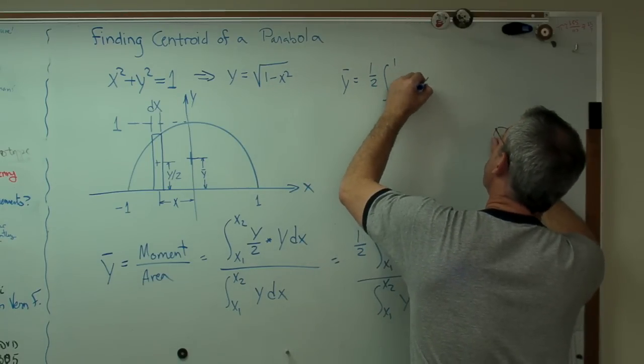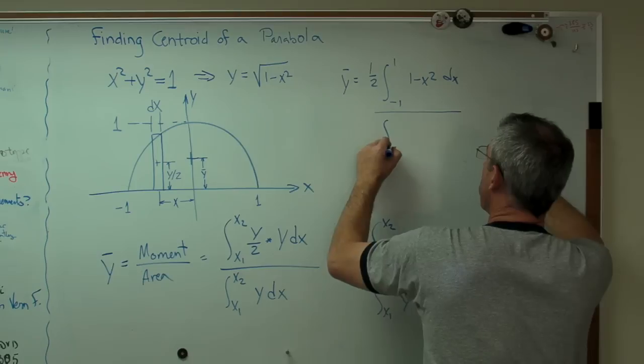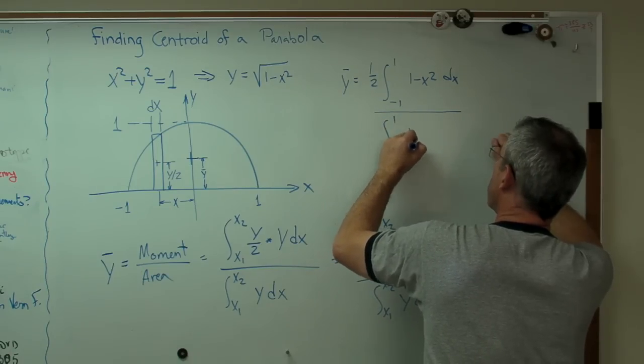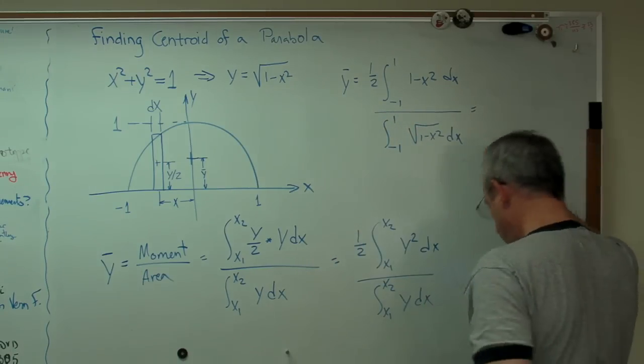This is going to be y bar equals one half integral from minus one to one of that squared, which is one minus x squared dx, over the integral of minus one to one square root one minus x squared dx.